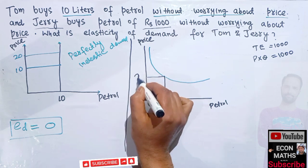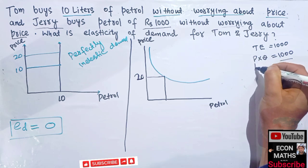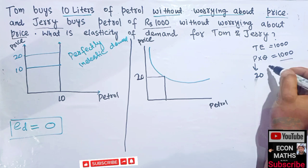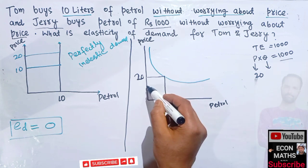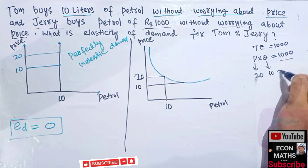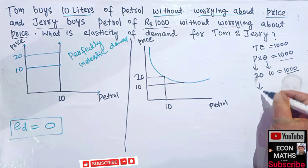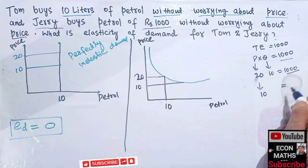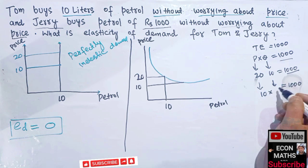Let's say price is 20. Then quantity demanded will be 50, because 20 × 50 = 1000. Now if price falls to 10, total expenditure remains fixed at 1000 rupees. So quantity demanded becomes 100, because 10 × 100 = 1000.